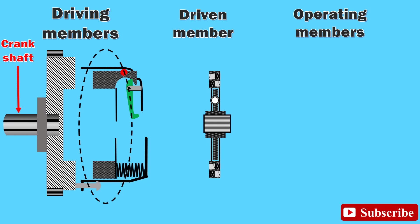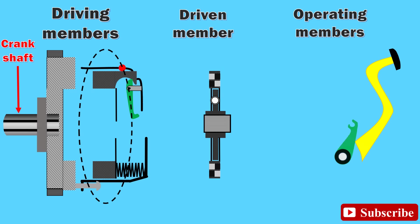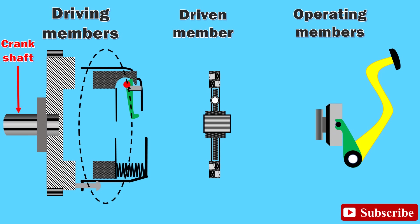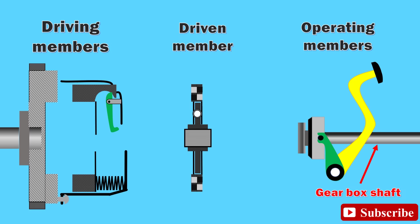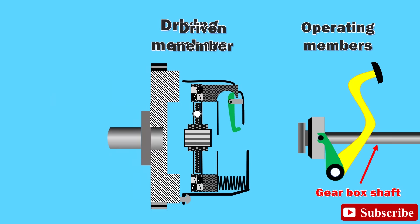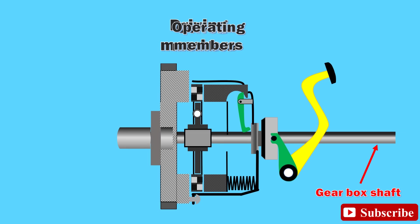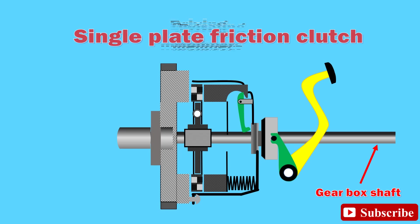Operating members: the operating members consist of a foot pedal, linkage, release bearing, and return spring to ensure proper operation of the clutch. When all the main parts — driving members, operating members, and driven members — are assembled together, it makes a single plate friction clutch.